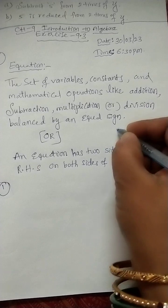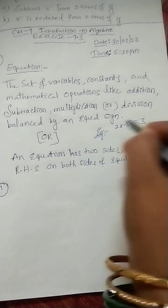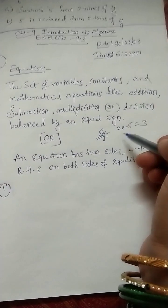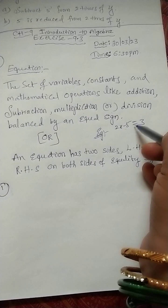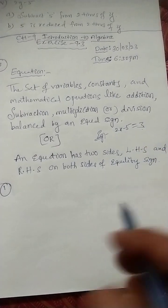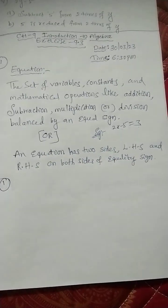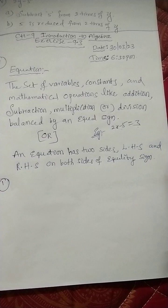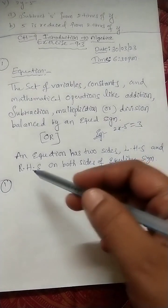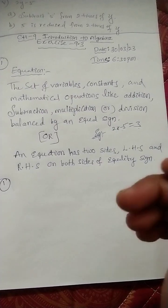For example, 2x minus 5 is equal to 3. Here, variables are there — x — and we use operations, and it contains an equal sign. It is having LHS and RHS. We can call this an equation. An equation has two sides: LHS and RHS, on both sides of an equality sign.